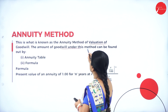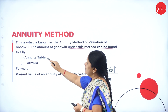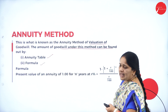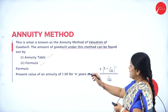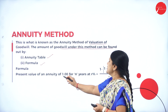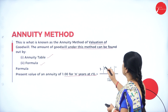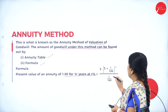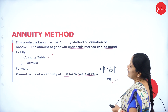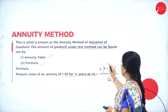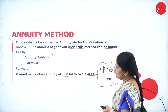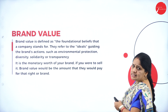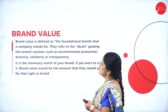The amount of goodwill under this method can be found using the annuity table and the formula. The present value of an annuity of rupees 1 for n years at r percent is: [1 minus (1 plus r/100) to the power of negative n] divided by (r/100).